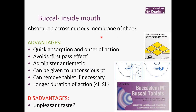Then we've got the buccal route, which is inside the mouth — under the cheek, using the mucosal area of the cheek membrane but also on the gum. Prochlorperazine buccal tablets are available over the counter in pharmacy for nausea and vomiting with migraines. It works very quickly, with quick absorption and onset of action, avoids first pass metabolism, and gives 100% bioavailability. It's very good for sickness and can be given to unconscious patients as it doesn't require swallowing reflexes and there is no risk of choking.